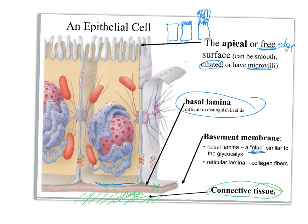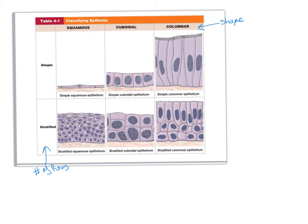Now that we have the basic shape and structure — apical at the top, basal at the bottom — let's talk about how we organize the types of epithelial cells. We discuss cells in terms of how many rows they have versus their overall shape. The word 'simple' means one row; 'stratified' means two or more rows. The shapes are squamous (flat), cuboidal (cube-shaped), and columnar (basically a column or rectangle).